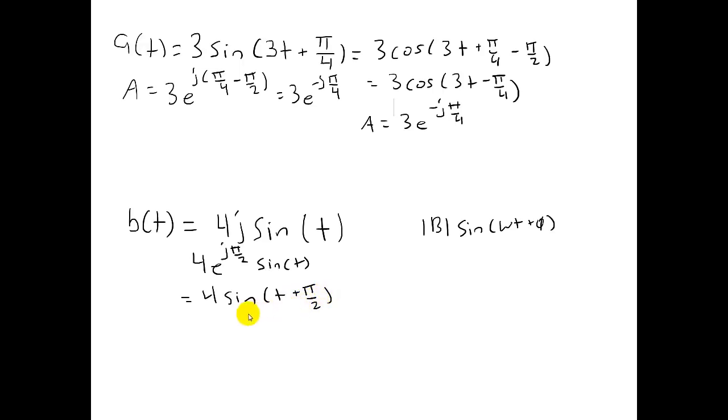Now this is written in the form we're familiar with. And I can write the phasor for B as 4e to the j pi over 2 minus pi over 2, which gives us a phase angle of 0 degrees. Therefore the phasor for B is just 4.